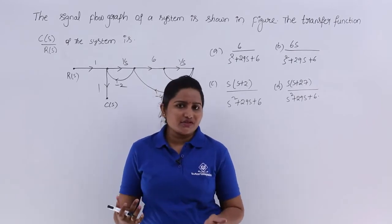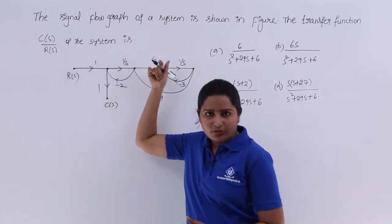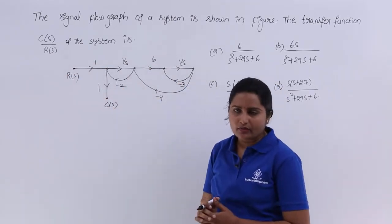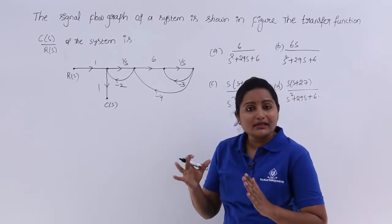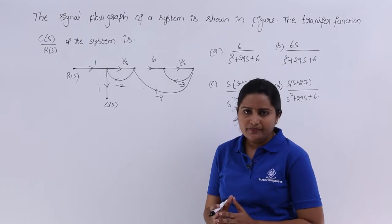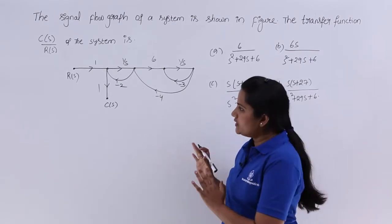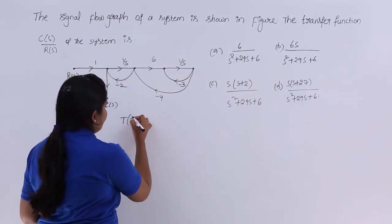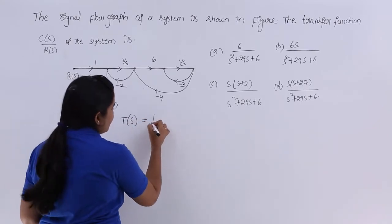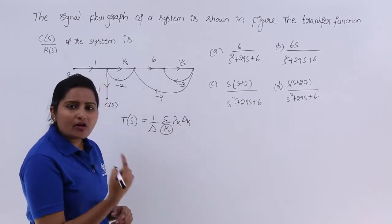The transfer function is nothing but C(s) by R(s), where C(s) is the output transform and R(s) is the input transform. Now when bulky signal flow graphs are given, we use Mason's gain formula. The Mason's gain formula to calculate the transfer function or total gain of the system is equal to (1/delta) times the summation of Pk into delta K, where K represents the number of forward paths.